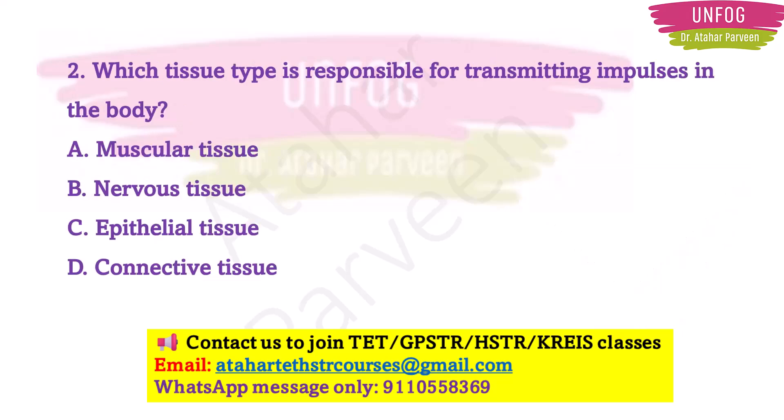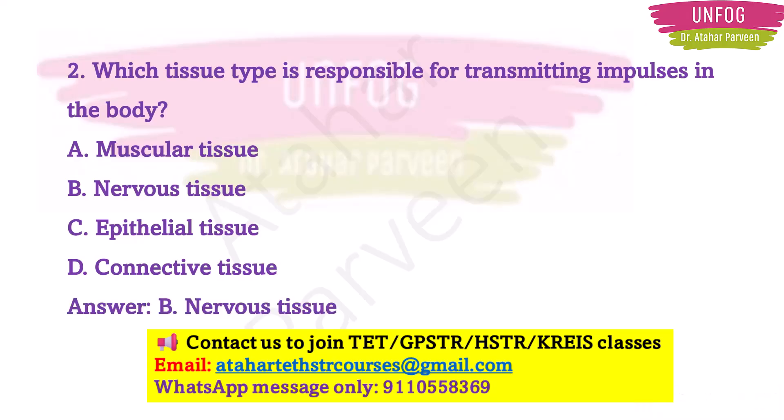Question 2: Which tissue type is responsible for transmitting impulses in the body? The options are muscular, nervous, epithelial, and connective tissue. The tissue responsible for transmitting impulses is nervous tissue. Transmitting impulse means it should be related to our nerves — with that logic also you can give the correct answer. The answer is option B: nervous tissue.